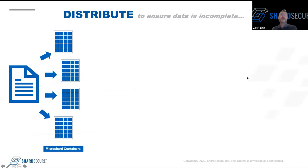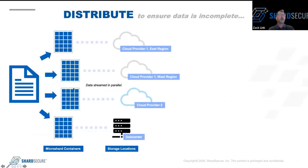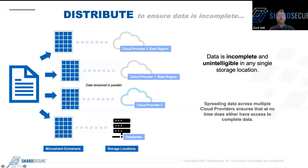After shredding and mixing, the final step is to distribute the data. Using an example of four storage locations, you have your four micro shard containers and you can send these to any storage locations you configure. We support on-prem, single cloud, multi-cloud, and hybrid cloud, and you can mix and match these storage locations as much as you want. At any of those locations, that data is totally unreadable and unusable.